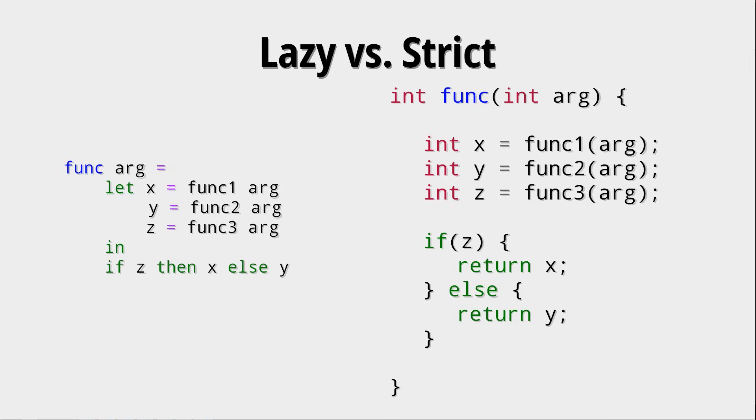Let's assume that the functions func1, func2, and func3 all take one year to finish. In a strictly evaluated language, like for example C or Java, the example on the right would take three years to finish. Because we first evaluate func1, that will take a year, then we evaluate func2, and then func3. After that, we do this if-then-else, which probably won't take that long. So the whole function takes three years to finish.